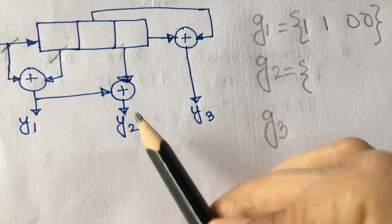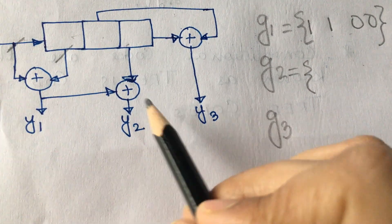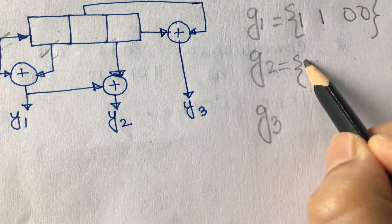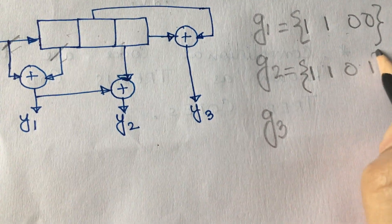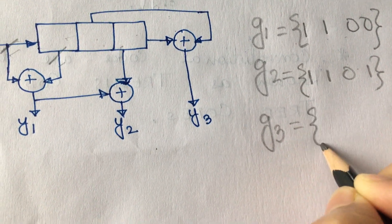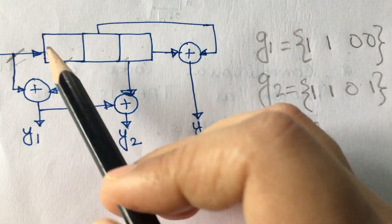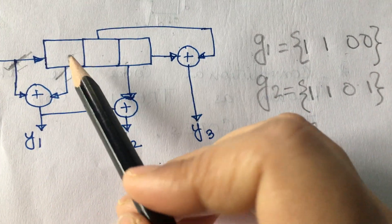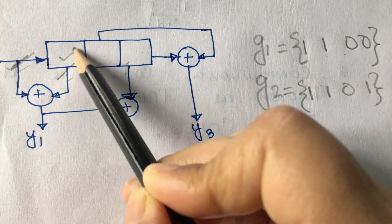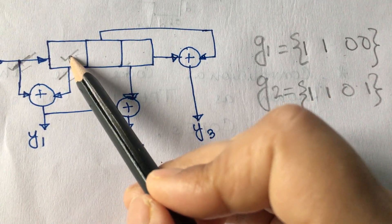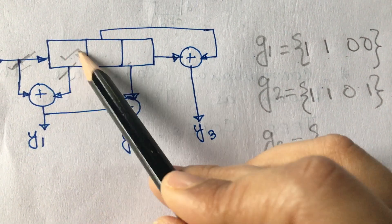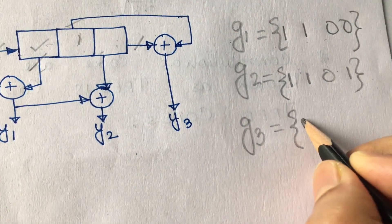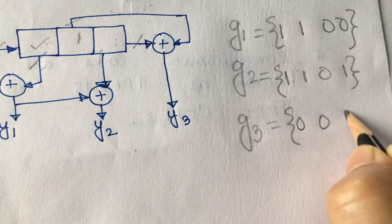G2, the generator sequence corresponding to Y2, is 1, 1, 0, 1. G3 corresponding to Y3: there is no connection with the input bit, so 0. There is no connection for the output of the first shift register, so 0 as well. We have 1 for the second shift register connection and 1 for the third. So G3 is 0, 0, 1, 1.